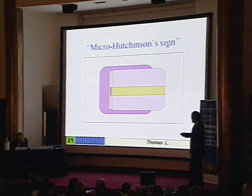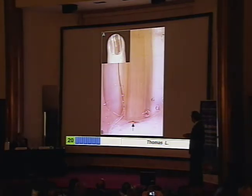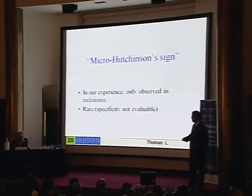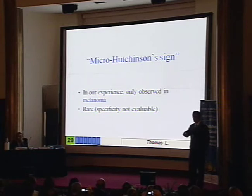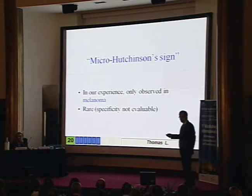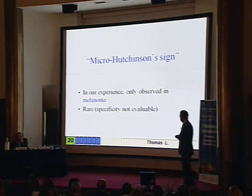The micro-Hutchinson sign is a very rare symptom, but when it's observed, it's defined by the presence of pigment in the cuticle or in the subungual skin that is not visible clinically. This is in favor of melanoma, but it's extremely rare. You cannot rely on this symptom to make the diagnosis of early melanoma, but when it's present, it's very highly in favor.